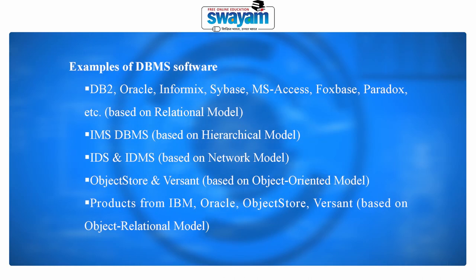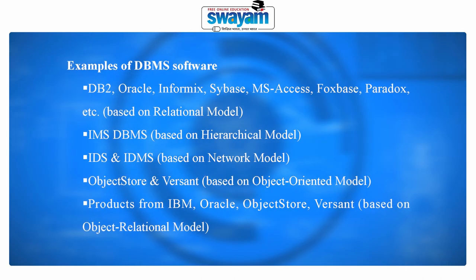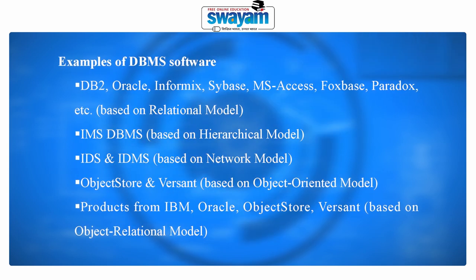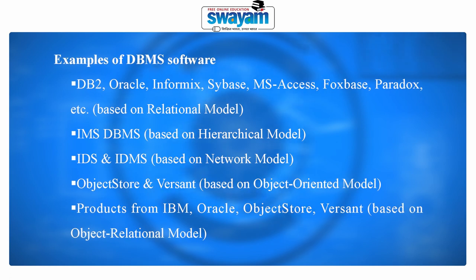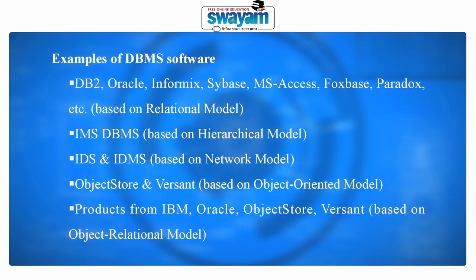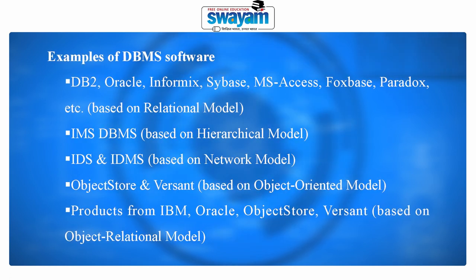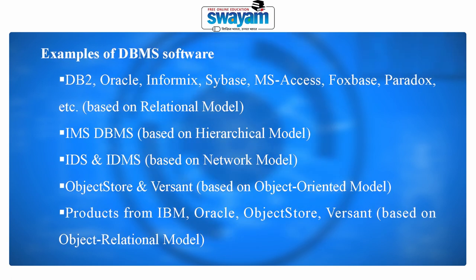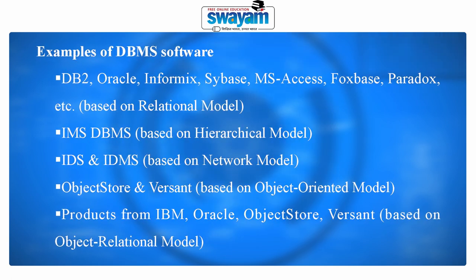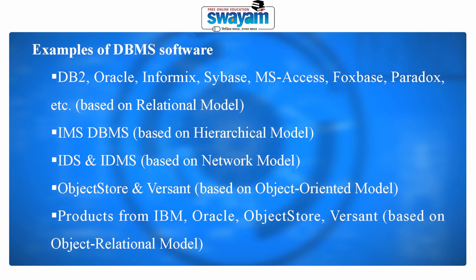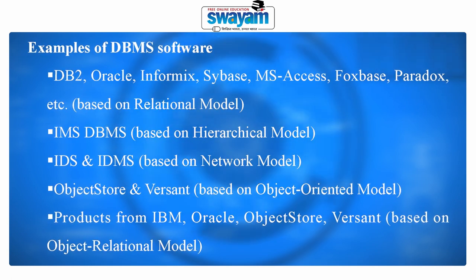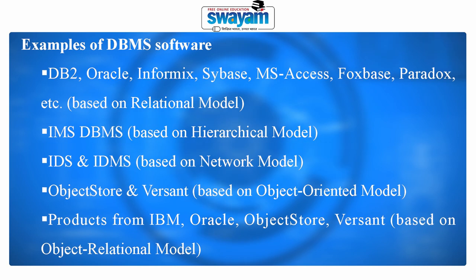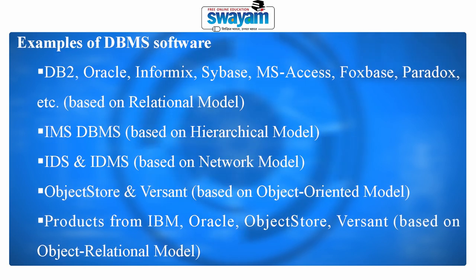Examples of DBMS software: DB2, Oracle, Informix, Sybase, MSXS, Foxbase, and Paradox are all based on the relational model. IMS DBMS is based on the hierarchical model. IDS DBMS is based on the network model. Object Store version is based on the object-oriented model. Products from IBM Oracle Object Store version are based on the object-relational model.